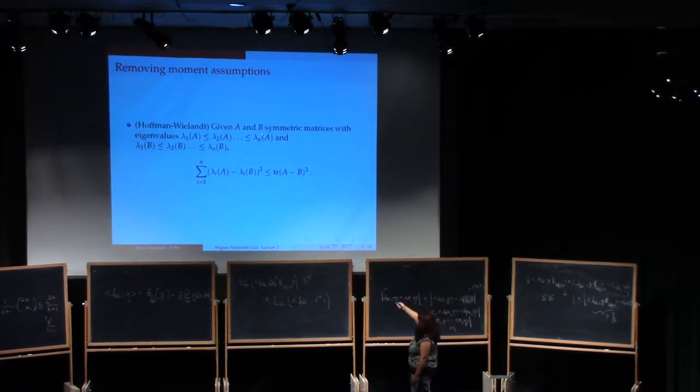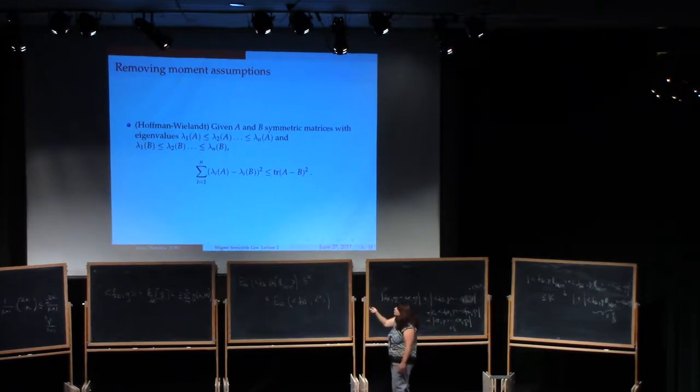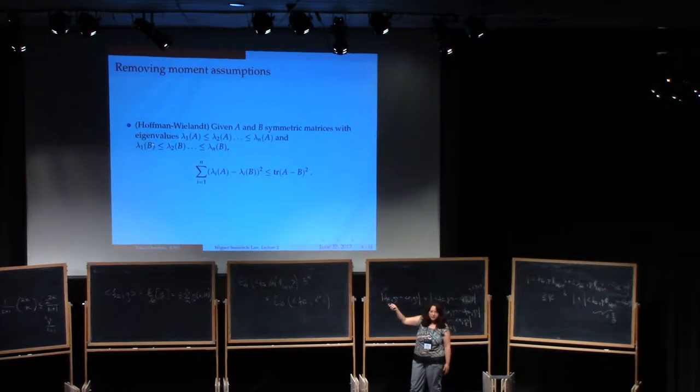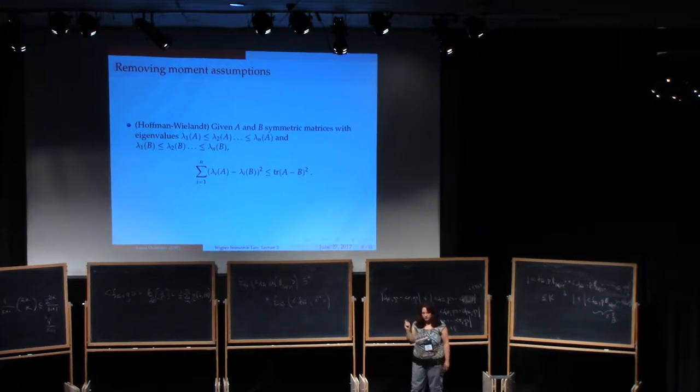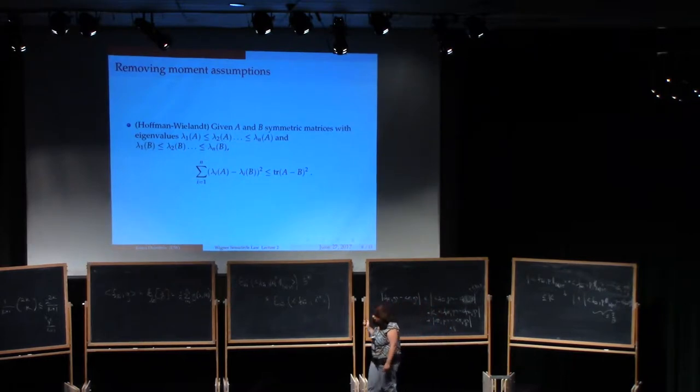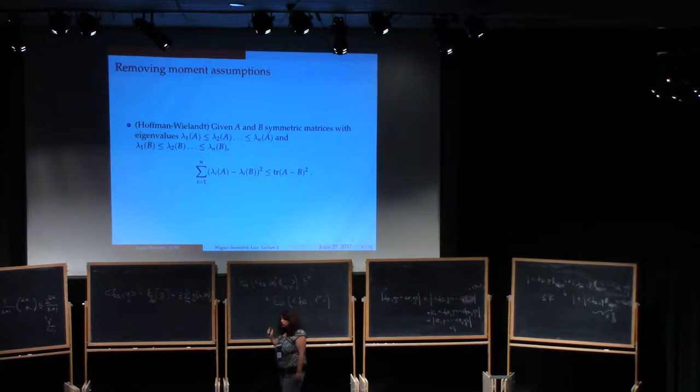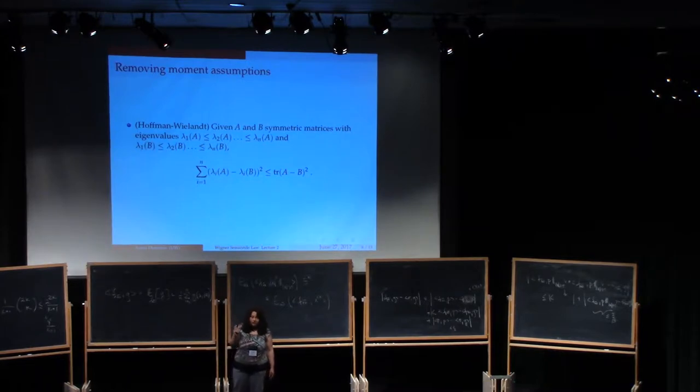So the whole thing is just bringing together very beautiful linear algebra facts to state the following thing. Suppose you have two symmetric matrices A and B. And here I suppose that their eigenvalues are ordered, lambda 1 through lambda n in increasing order. Then the sum of the squares of the eigenvalues is less than or equal to the trace of the square of the difference matrix. This is a perturbation bound, which turns out to be very useful in practice in linear algebra, in numerical linear algebra, and as we see right now in random matrix theory.